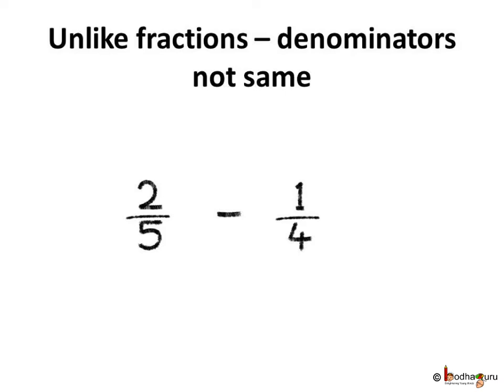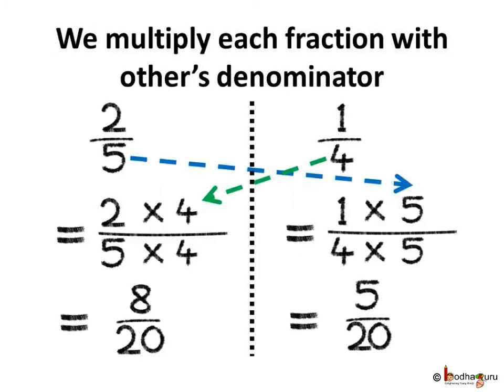In 2 by 5 and 1 by 4, we need to make the denominators same — that is, we need to make them like fractions. So we multiply each denominator with the other's denominator: 5 into 4 and 4 into 5, so both are 20.